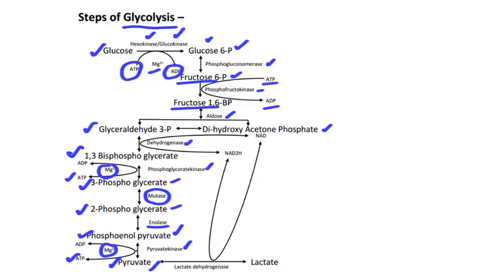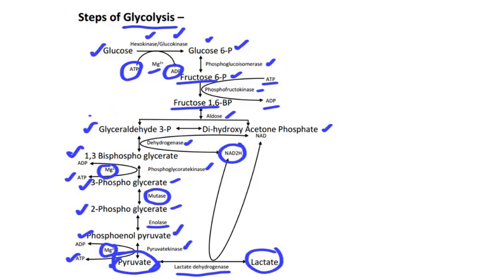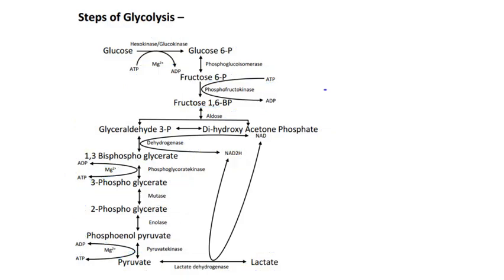In anaerobic glycolysis, pyruvate produces lactate in the presence of lactate dehydrogenase. Here, 1 molecule of NADH is used, which was produced in the step where glyceraldehyde-3-phosphate is converted into 1,3-bisphosphoglycerate.